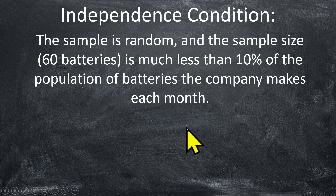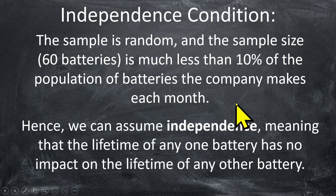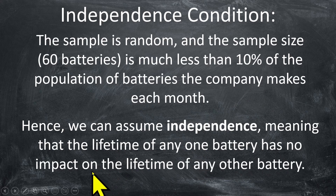That is actually the case here. The sample, we were told, is a random sample. The sample size is 60 batteries, which certainly is less than 10% of the population of batteries the company makes each month. So we can say that the independence condition holds. What that means is that we can assume that the lifetime of any one battery in our sample has no impact on the lifetime of any other battery in that same sample — the batteries' lifetimes are independent of each other.